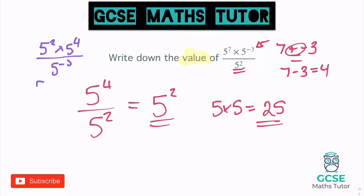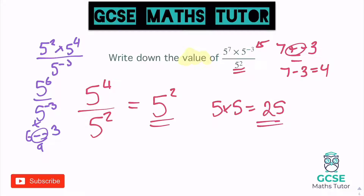Now we'd still tidy up the top — we'd get five to the power of six on the top, divided by five to the power of negative three on the bottom. Now this time when we subtract, six take away negative three becomes a plus here, and six plus three is nine. So actually we would end up with five to the power of nine for this particular one.